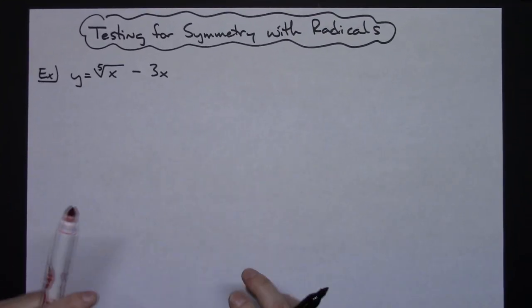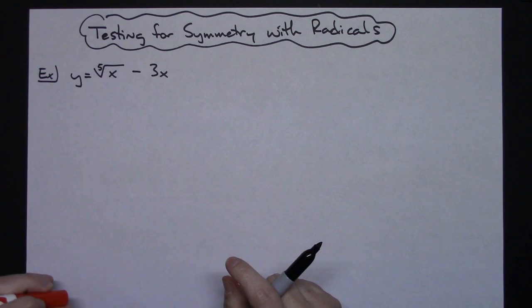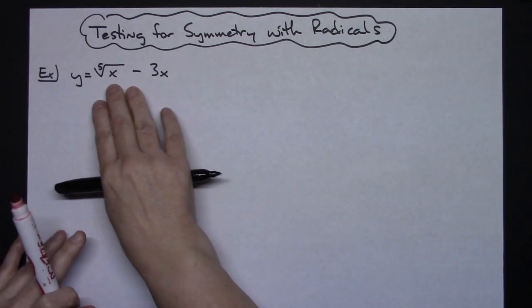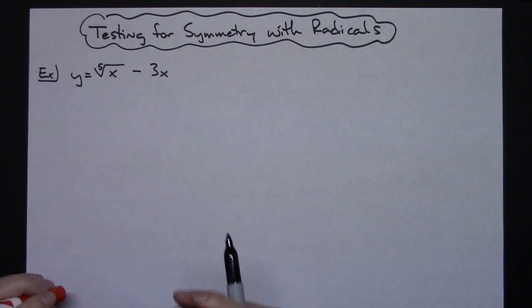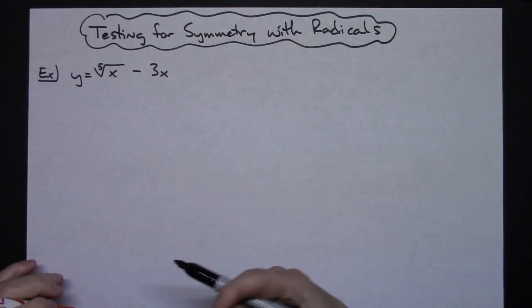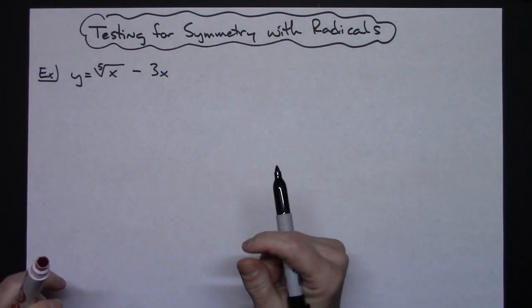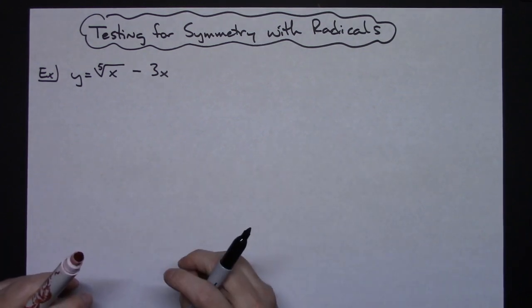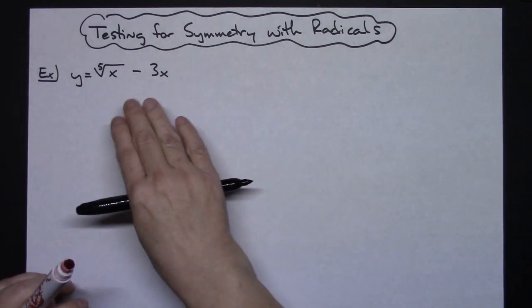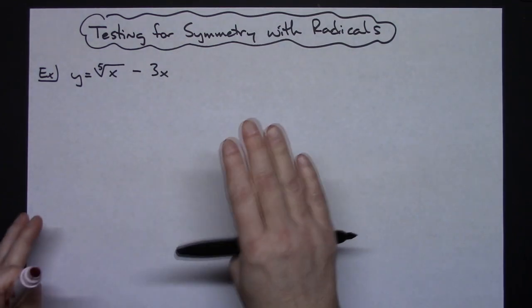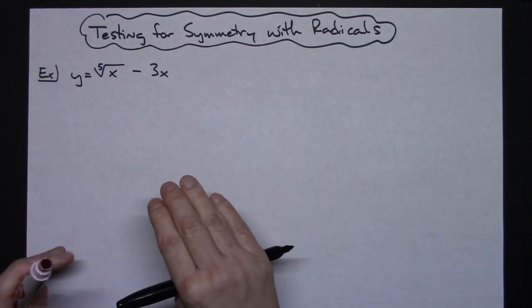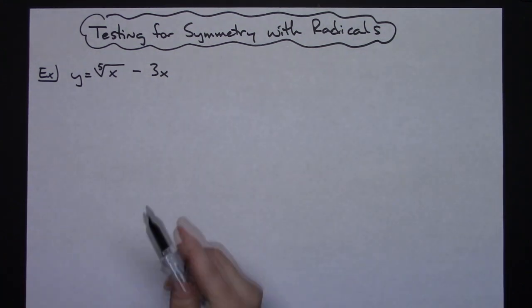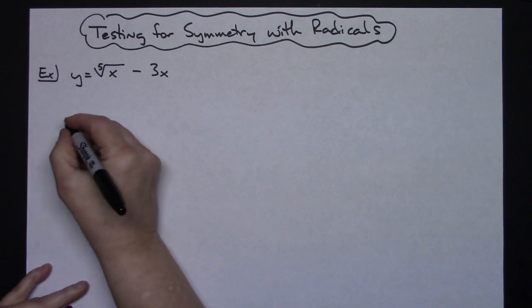In this video we're going to take a look at testing for symmetry with radicals. Our function is going to have a fifth root in it — radicals in functions tend to make this a little bit harder, which is why I wanted to specifically test this type of function. I'm assuming you have some background knowledge on testing for symmetry around the x-axis, the y-axis, and the origin. We will do all three in this video.